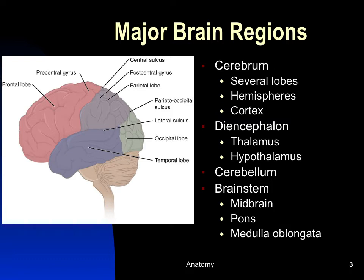Now we'll go over the major brain regions. The cerebrum is divided into left and right hemispheres, and each hemisphere is named for the bones lying above it — the frontal, parietal, temporal, and occipital lobes. The cerebrum also has a layer of gray matter made of unmyelinated neurons on its surface called the cerebral cortex.